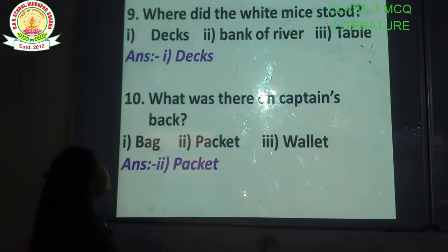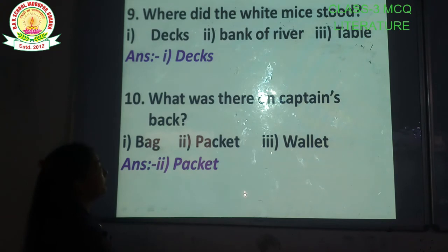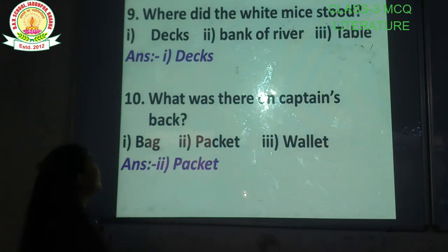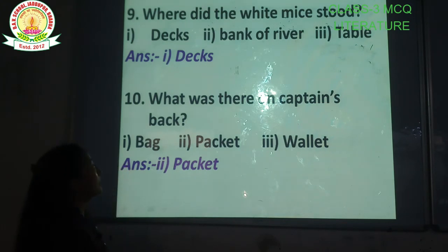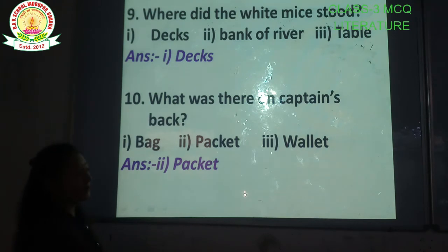Question number 9: Where did the white mice stand? Options are: decks, bank of river, table. The correct answer is option number 1 — decks.